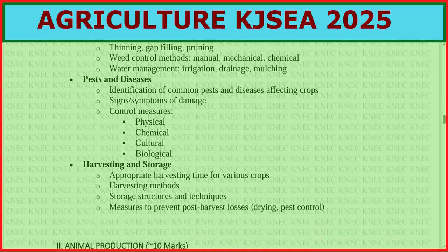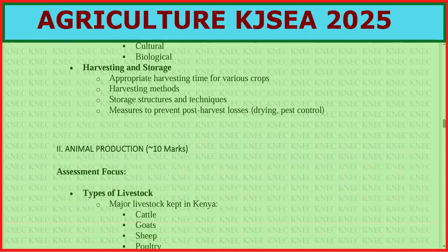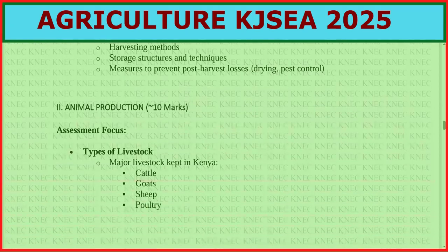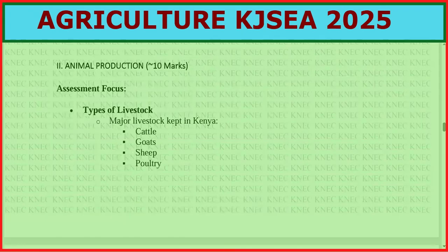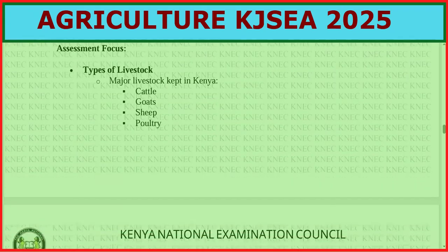Moving to animal production: focus on types of livestock — the major livestock kept in Kenya — cattle, goat, sheep, poultry.